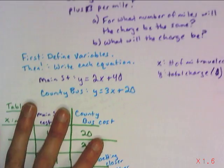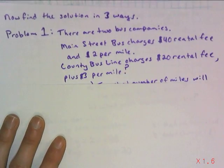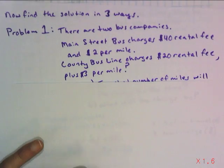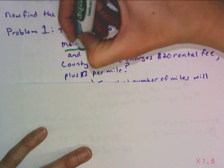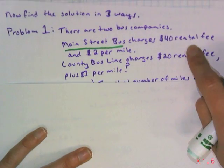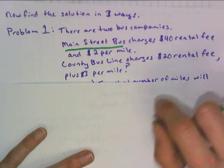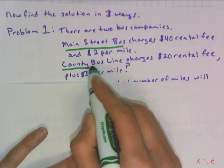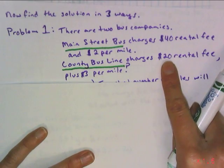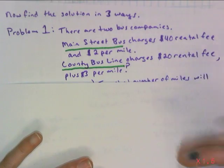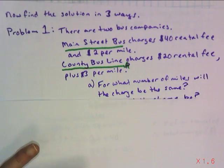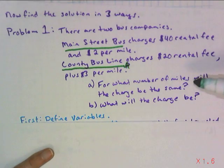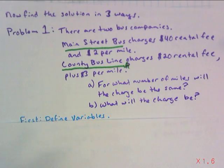Now, we're going to figure out how to find the solution in three different ways with some context. The problem is you have two charter bus companies. We have one called Main Street Bus - $40 rental fee and $2 per mile. And then County Bus Line charges a $20 rental fee plus $3 per mile. For what number of miles will the charge be the same? And what will the charge be?